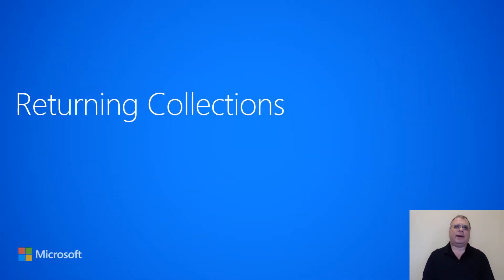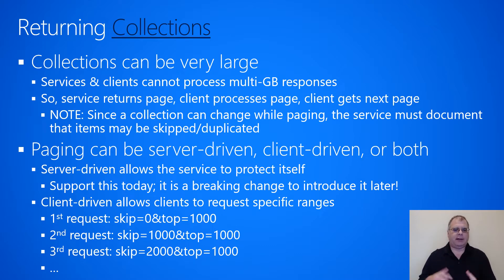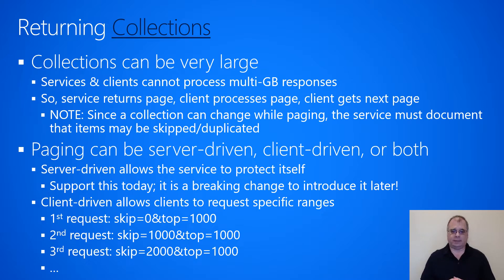In this section, we're going to talk about how a service can return collections of items back to a client. In the cloud, collections can be very large, and a service can't return multiple gigabytes within a single response, and a client also can't really process multiple gigabytes in a single response. So what typically happens is that the service breaks the collection down into pages.